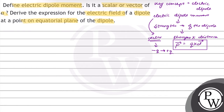Now, coming to the third part of the question. We will find the electric field of a dipole at the equatorial plane of the dipole.